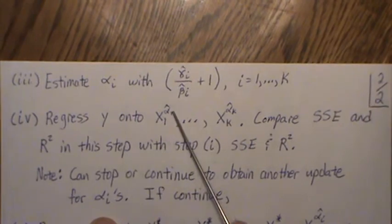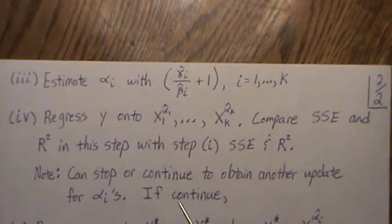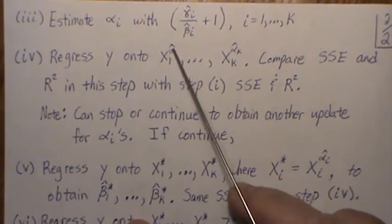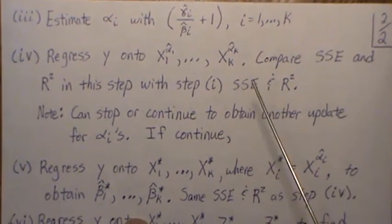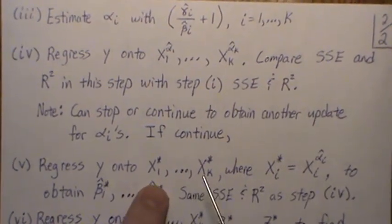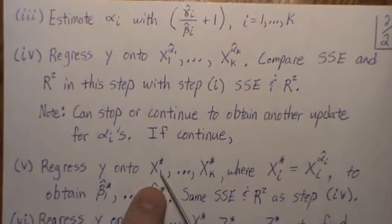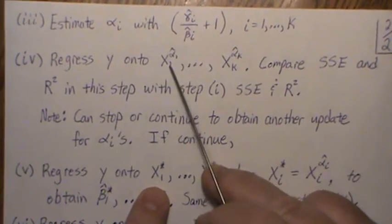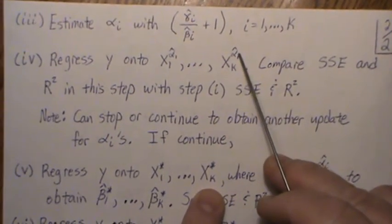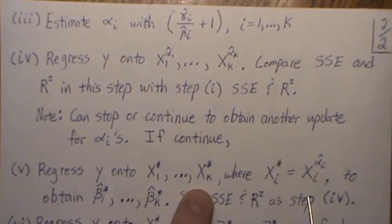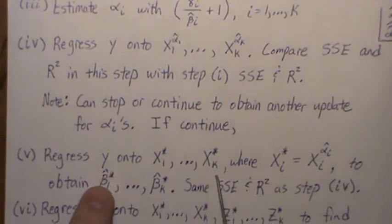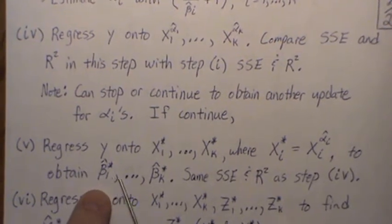So now we can stop and some do, or you can continue to obtain an update for these alphas. We're going to run it through this iterative process one more time to kind of re-estimate that. So if we continue, what we do is we take these regressors and we just, and we recall them X, but here notationally I'll just call it X star.